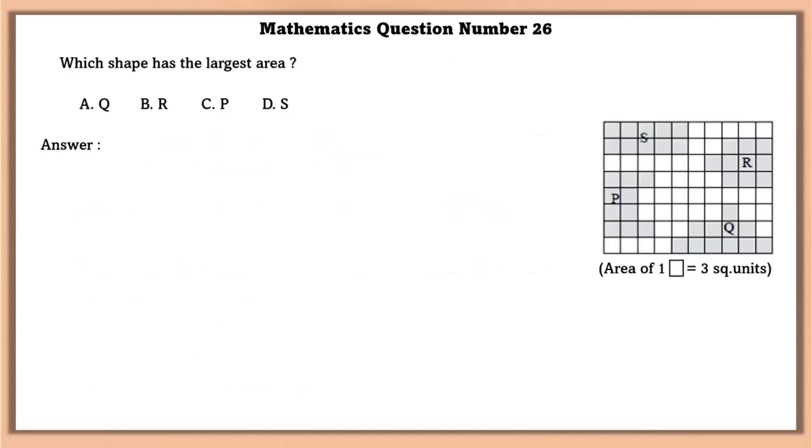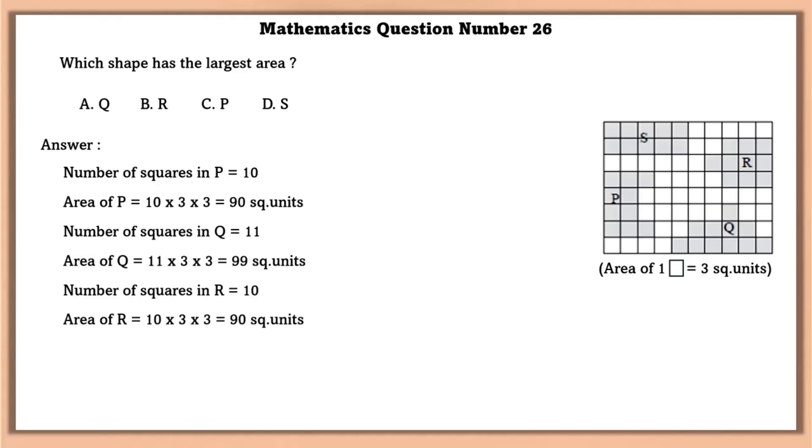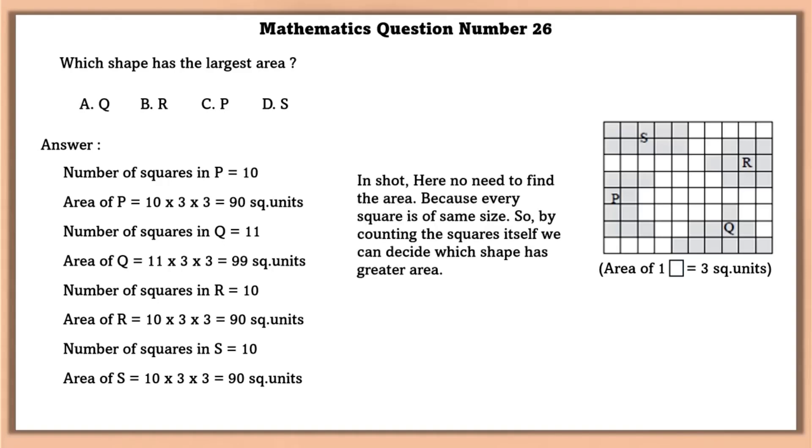Mathematics question number 26. Which shape has the largest area? Number of squares in P is equal to 10. So area of P is equal to 90. Similarly, area of Q is equal to 99. Area of R is 90. And area of S is 90. So in short here, no need to find the area because every square is the same size. So by counting the squares itself, we can decide which shape has the greater area. That is the Q1.